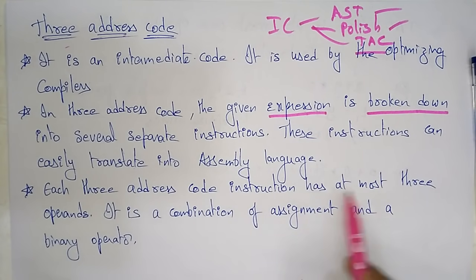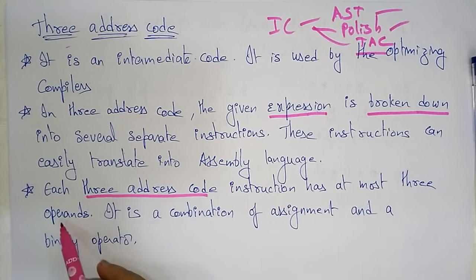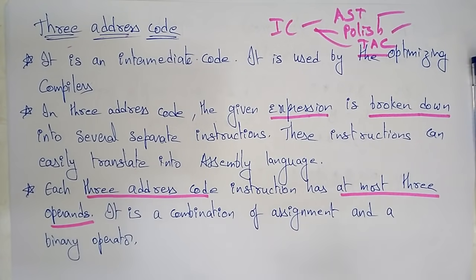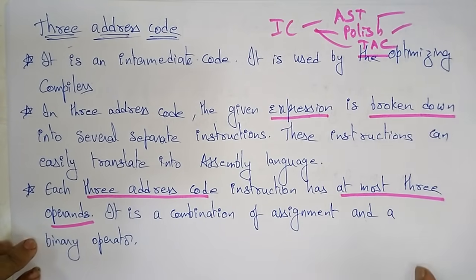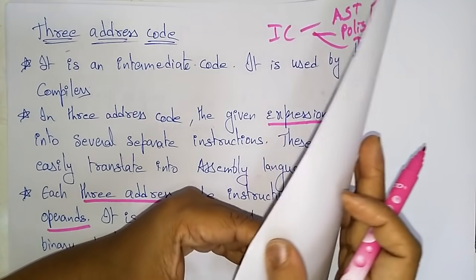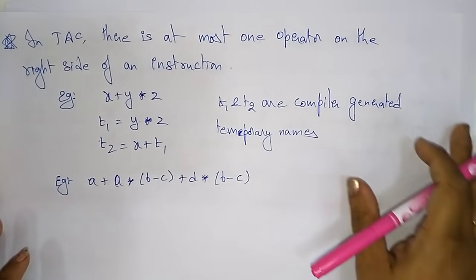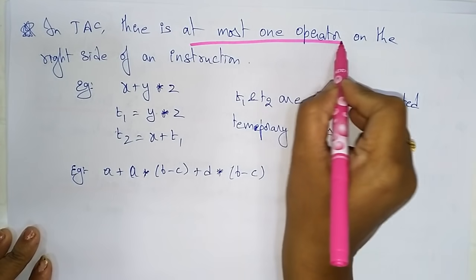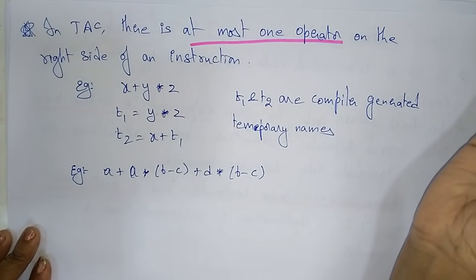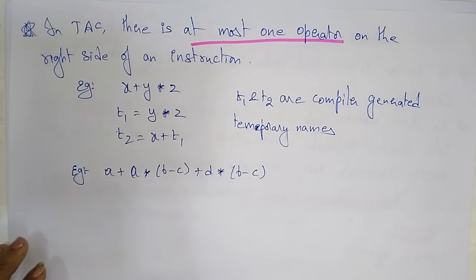Each three address code instruction has at most three operands. Remember that the three address code has at most three operands — no more than that. It is a combination of assignment and a binary operator. In three address code, there is at most one operator on the right side of an instruction. You must remember: at most one operator on the right side of an instruction.